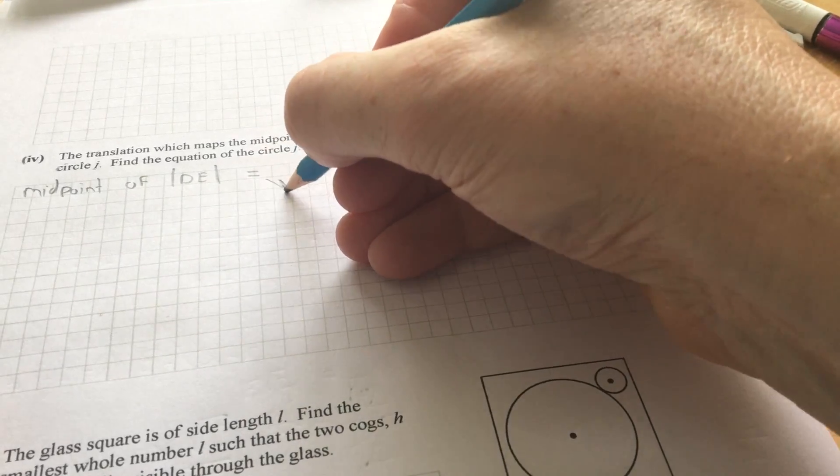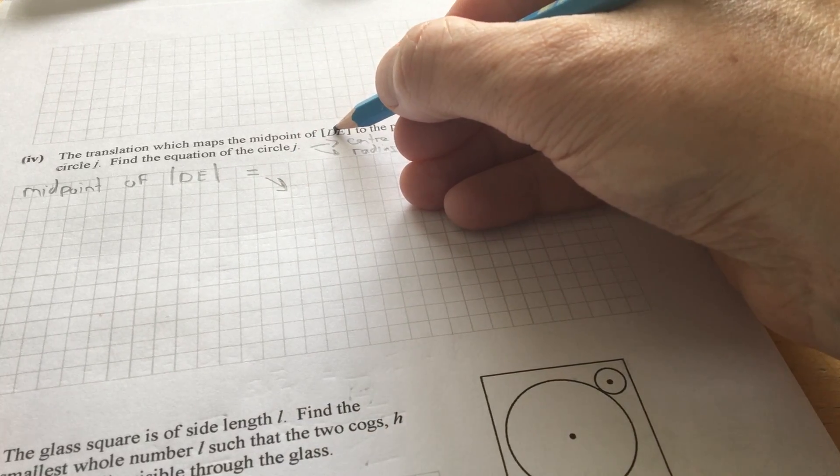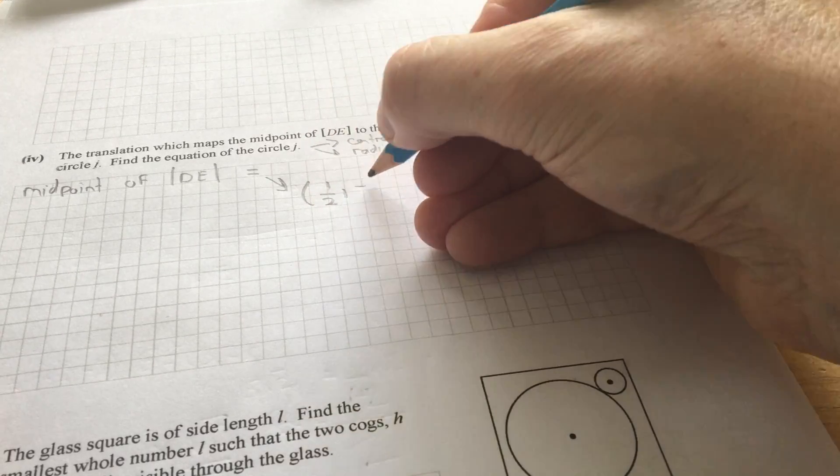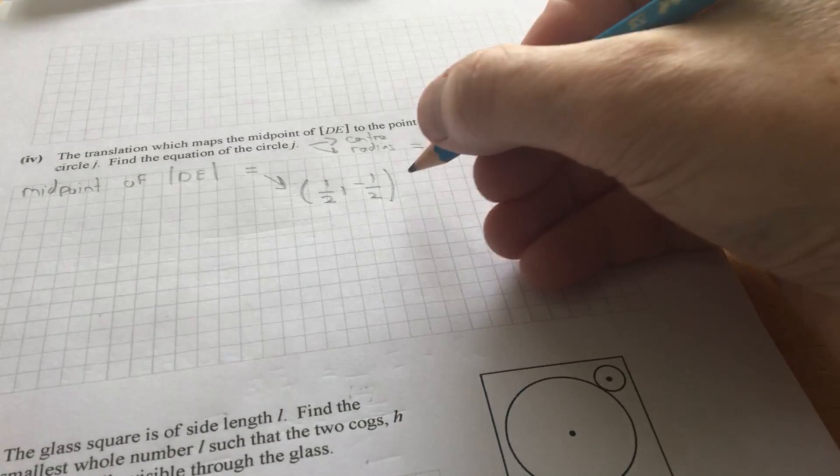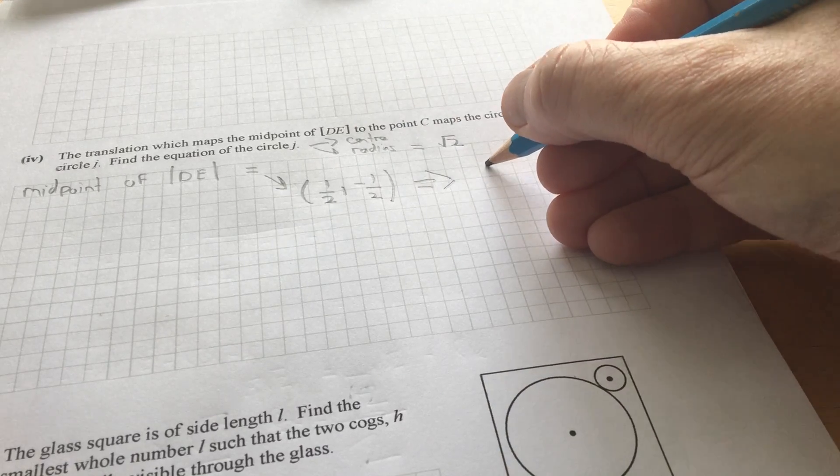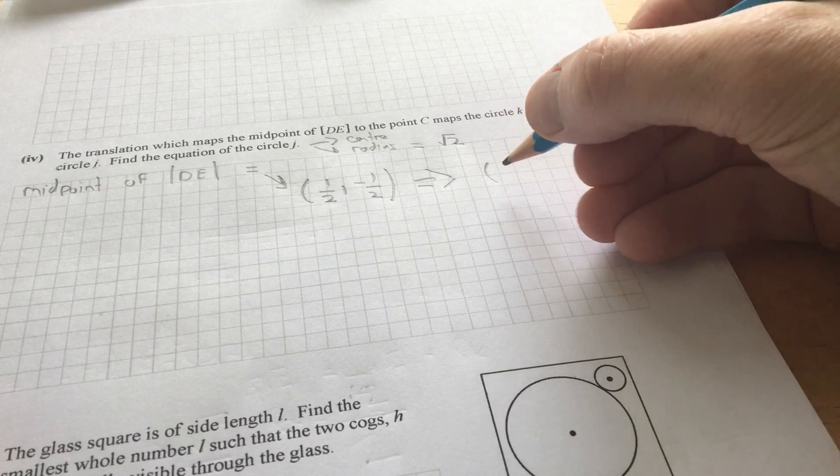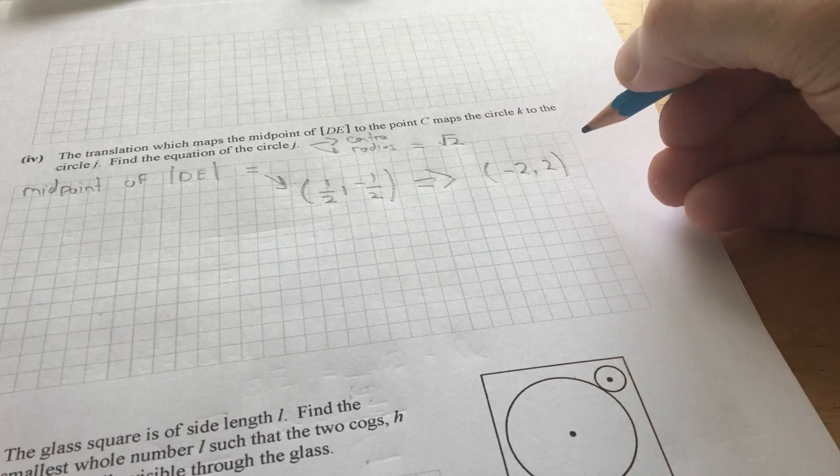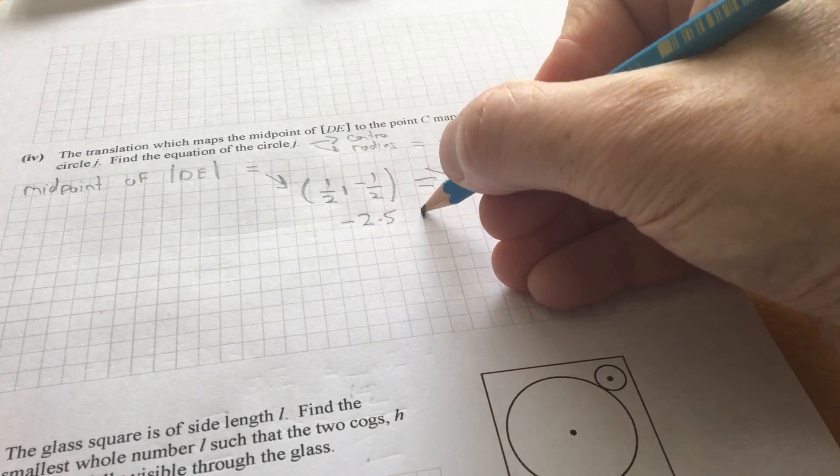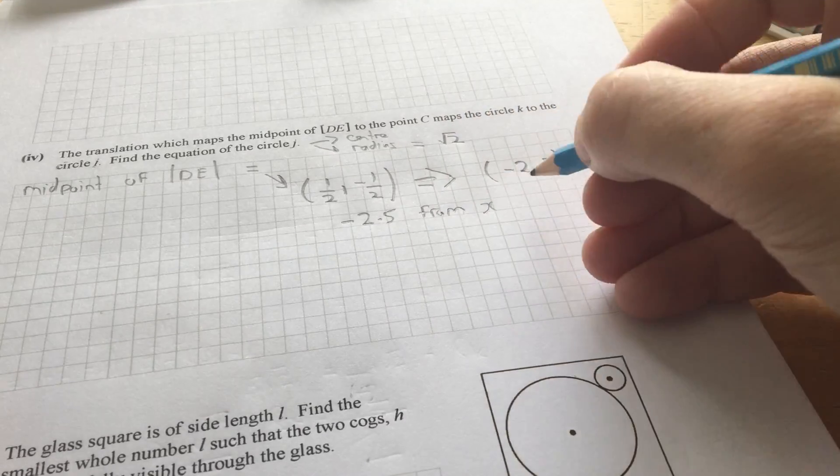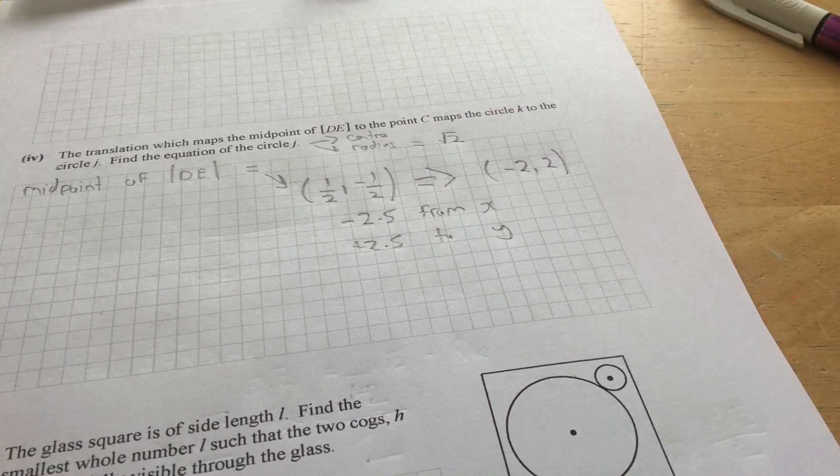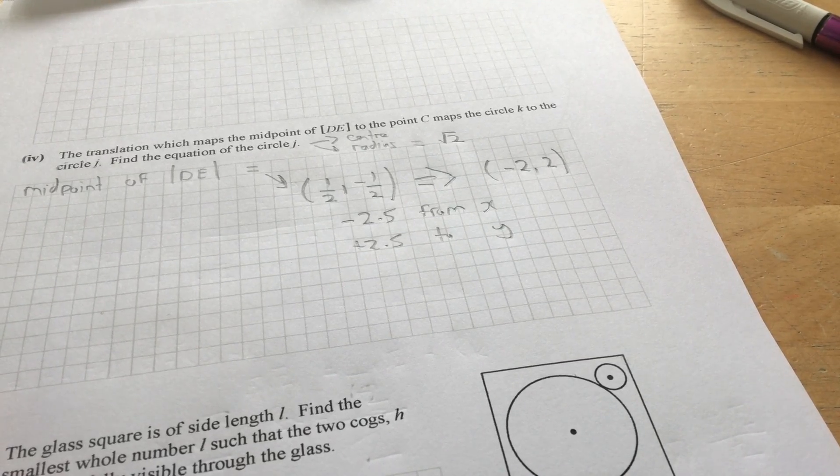Now, so, what's the center? Well, first of all, the midpoint of D, E. So, you have the coordinates of D. You have the coordinates of E. So, I'll let you work out the midpoint yourself using the midpoint formula. Now, that's the midpoint of D, E. And this translation maps the midpoint of D, E to the point C. Now, what is the point C? In an earlier part, it's minus 2, 2. So, basically, you're subtracting 2.5 from X. And you're adding 2.5 to Y.